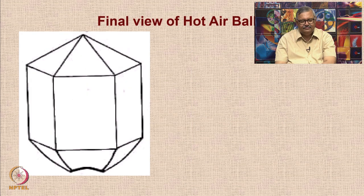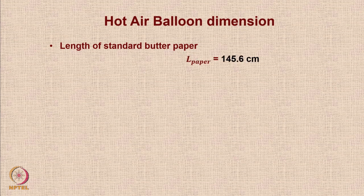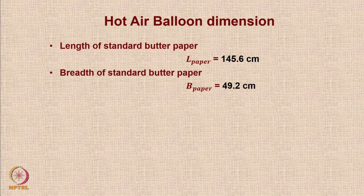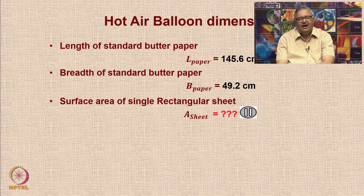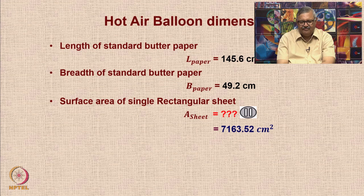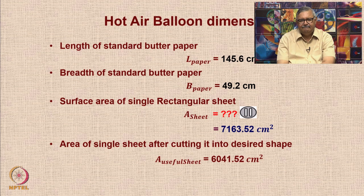The paper length available is 145.6 cm, breadth is 49.2 cm, and the surface area has to be calculated by multiplying the two. The area comes to 7163.52 square centimeters. After cutting the desired shape, the area of the useful single sheet is 6041.52 square centimeters.